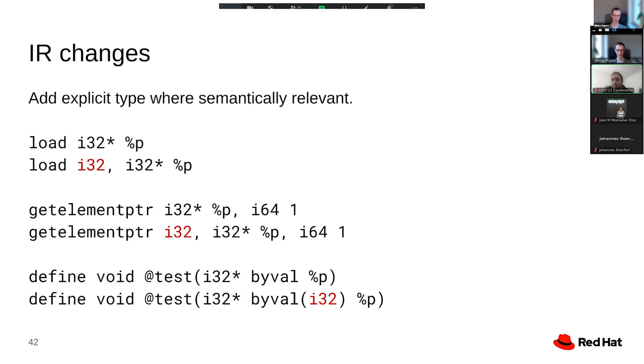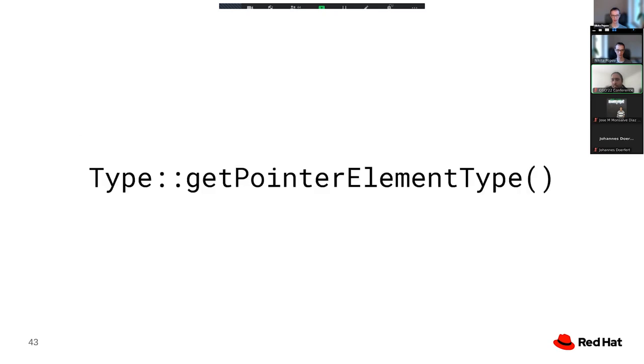Nowadays, and actually these IR changes have already happened many years in the past, now we explicitly specify the type being loaded. With typed pointers, this is simply redundant information because the loaded type and the pointer element type are required to match. With opaque pointers, this information is no longer redundant. We have to explicitly provide it. The same thing has happened in other places like getElementPointer instructions, byval, byref, sret attributes.